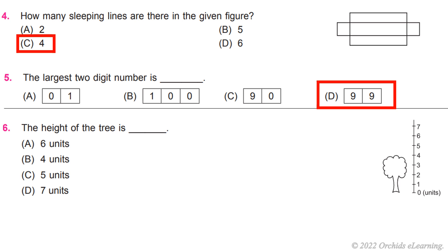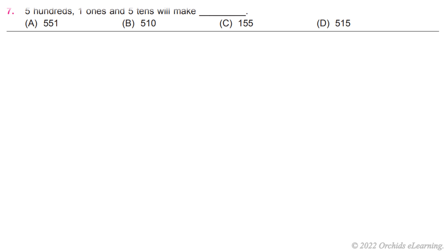Question 6: The height of the tree is 4 units. Five hundreds, one ones, and five tens will make 551.